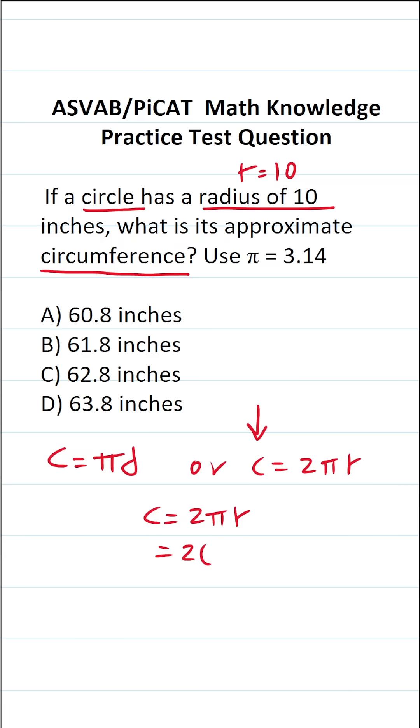This becomes 2 times—we're told to use 3.14 to approximate pi—so this is going to be 2 times 3.14 times our radius of 10. Let's do this the easy way. 2 times 10 is 20. This becomes 20 times 3.14.